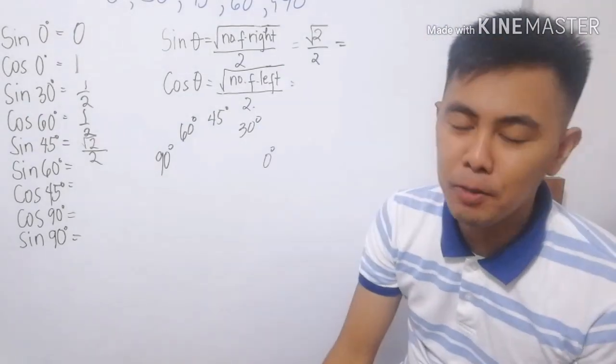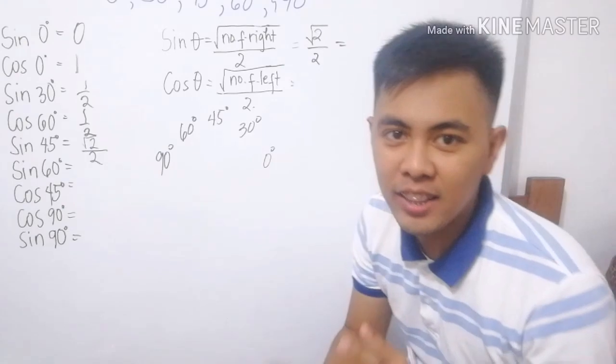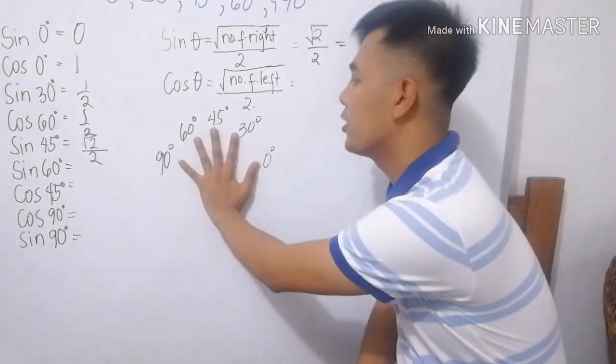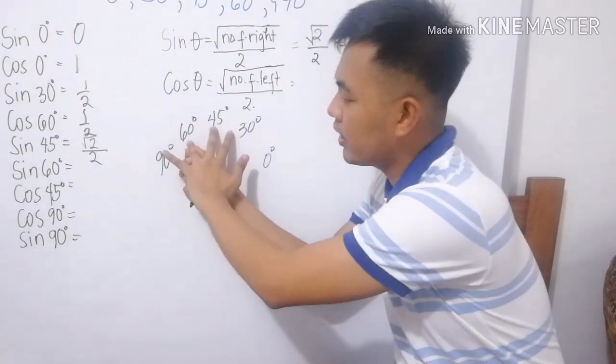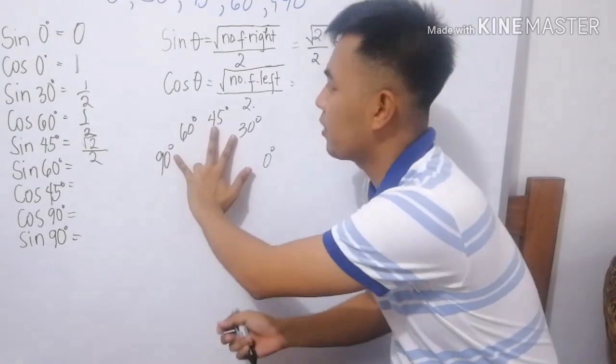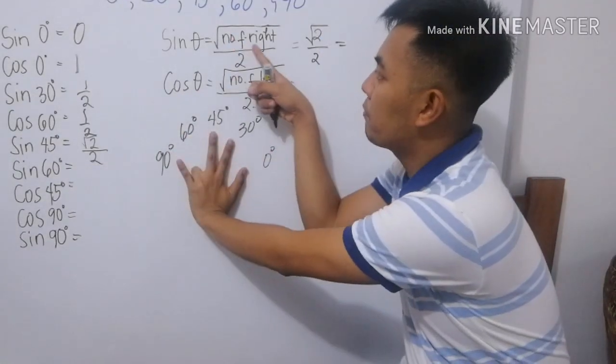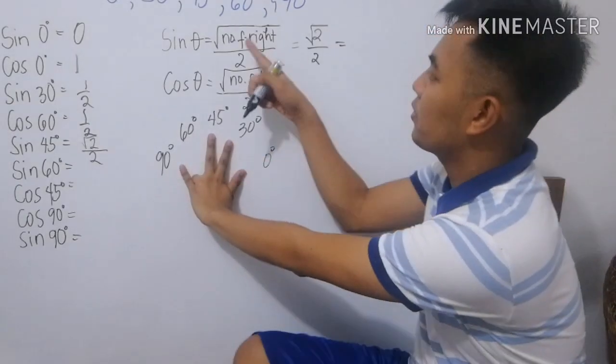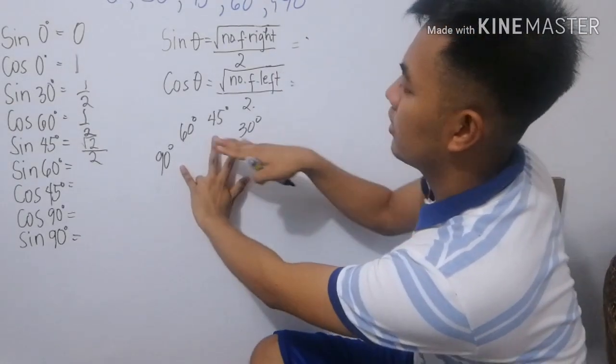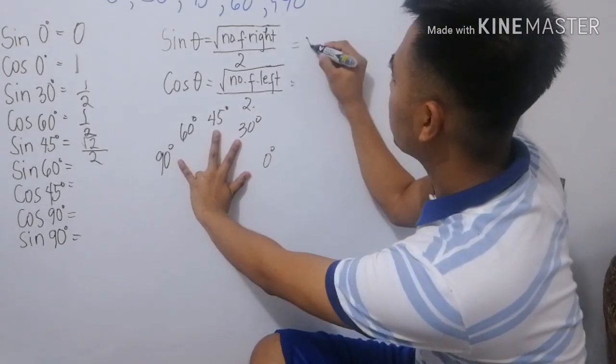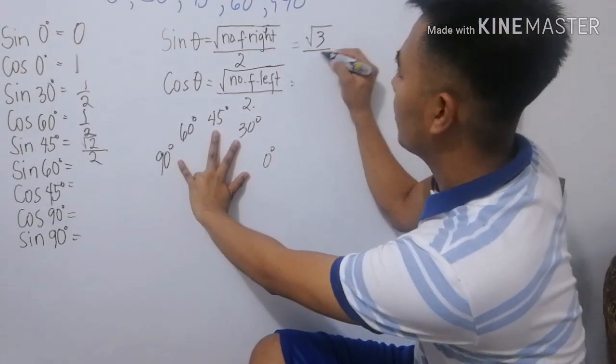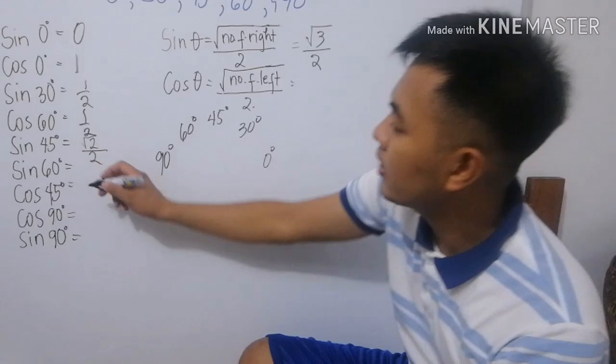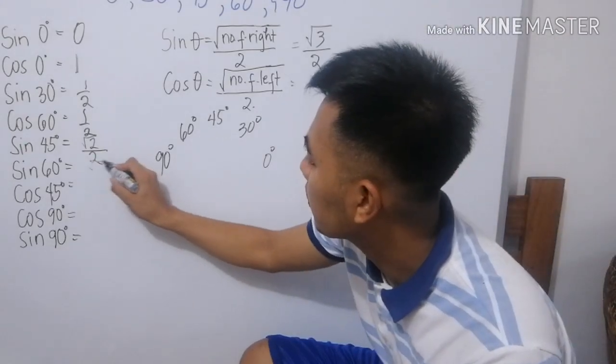Umuulan ngayon. Okay. Medyo nag-ingay. Pero, papatuloy natin. So, sine 60 degrees. 60 degrees ang ginagamit na angle. So, tupiin natin ito. Sine. Ano yung sine? Number of fingers to the right. Ilan yung daliring nasa kanan? Sine 60. Fingers to the right. Square root of 3 divided by 2. Hindi mo naman si-simplify yan. Kailang greater? So, ang sine 60 ay square root of 3 over 2.